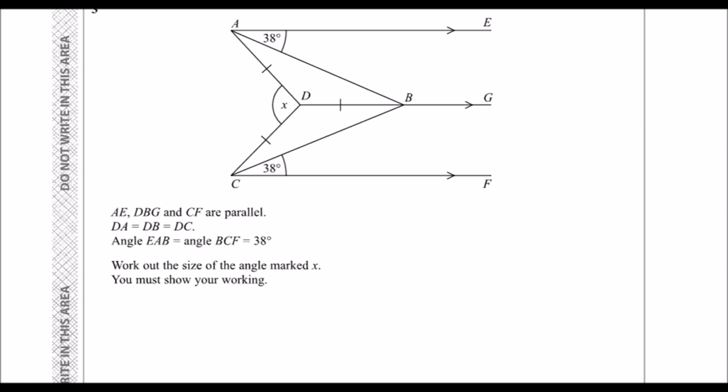So we've got angles in parallel lines, and you should be able to notice we've got this Z shape. So one there and one there. We've got a symmetrical pattern here. So if we've got that Z shape, that means they're alternate angles, and alternate angles are equal.